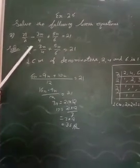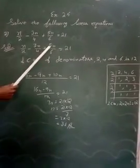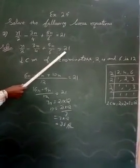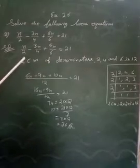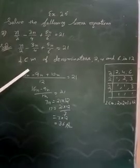Now solve that. n upon 2 minus 3n upon 4 plus 5n upon 6 is equal to 21. So if you need to eliminate the equation, then the LCM will be defined.